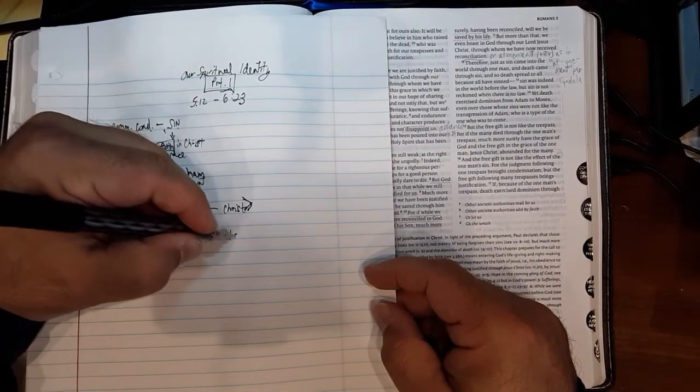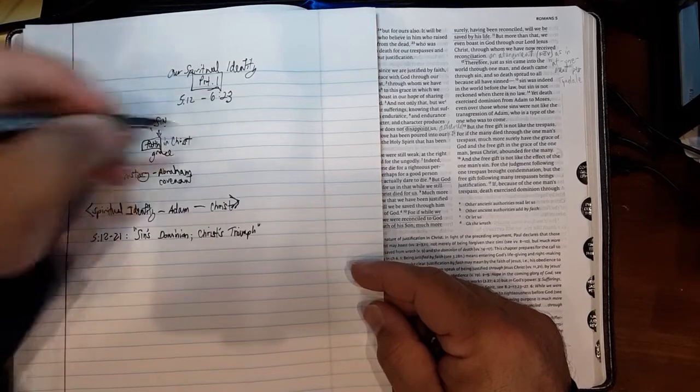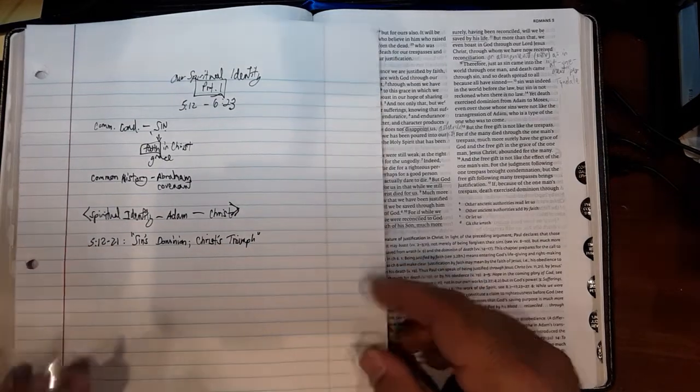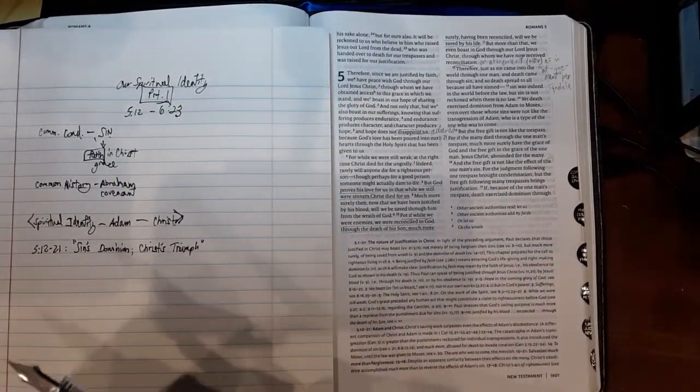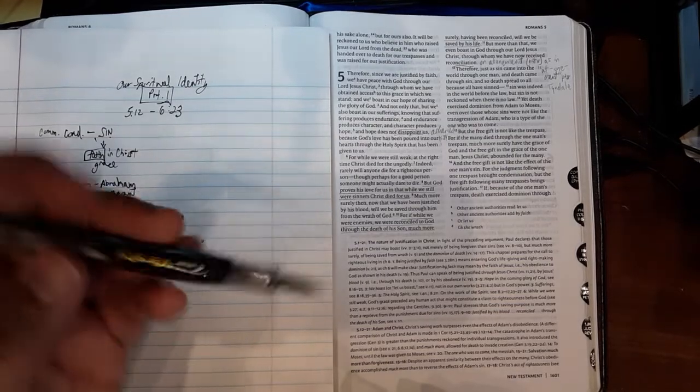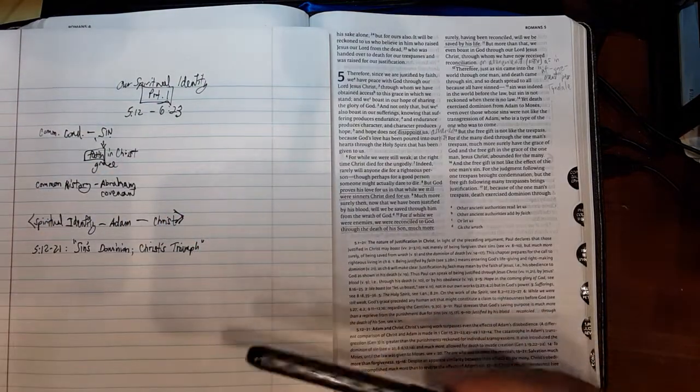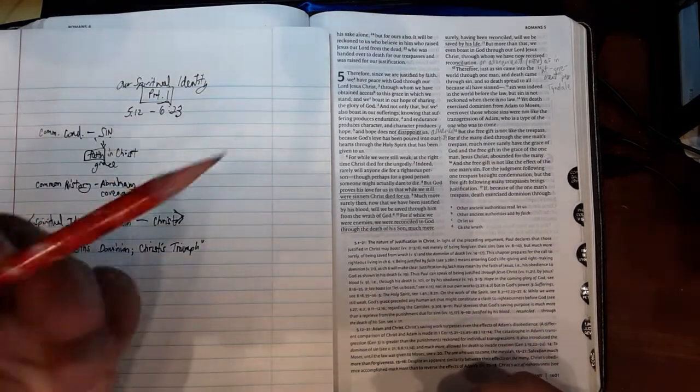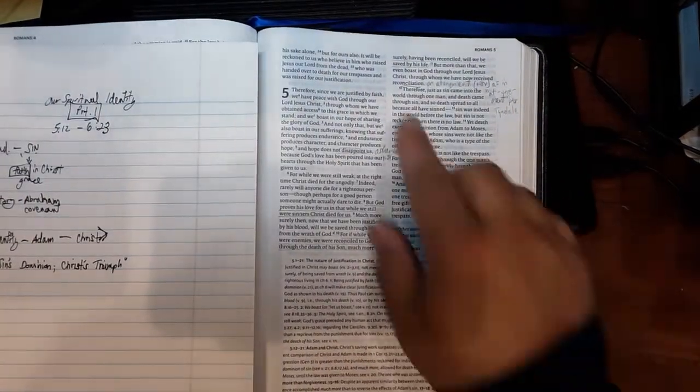Sin's Dominion, Christ's Triumph. I'm trying to think where I got this. This is language, I believe, from the New Interpreter's Bible Dictionary. So let's read 5:12 through 5:21 and stop along the way. I have my trusty pen here. Some of you may be wondering what kind of fountain pen I'm using. It's a Pilot Varsity. You can get it over the counter. It's $3.99. It's disposable, but it's pretty good. It doesn't bleed.